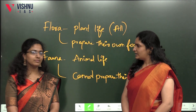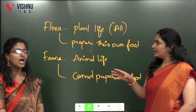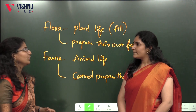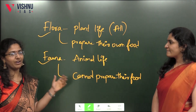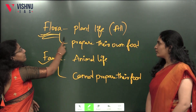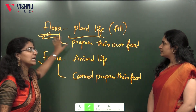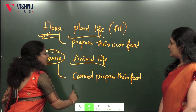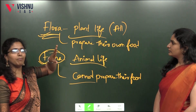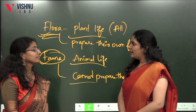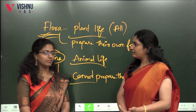Two basic environmental terms are flora and fauna. Since both words start with 'f,' students often confuse them. Flora is nothing but the plant life present on the planet — plants prepare their own food. Fauna is the animal life and cannot prepare its own food. Remember: flora is plant life, fauna is animal life.